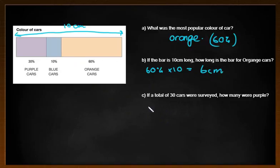Now it also says if a total of 30 cars were surveyed, how many were purple? Well, we had 30 percent were purple. I'm simply going to multiply that by 30. Now you can either do that as a decimal, a fraction, or a percentage. So remembering if it was a decimal, 0.3, a fraction 3 over 10 or 30 over 100. Either way, I'm simply going to put that in my calculator to get the answer of nine. So nine cars were in fact purple.